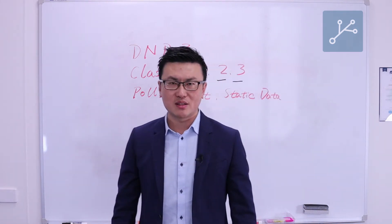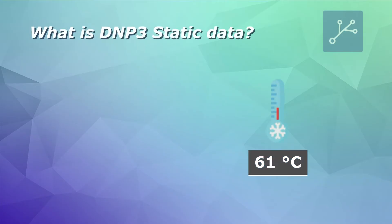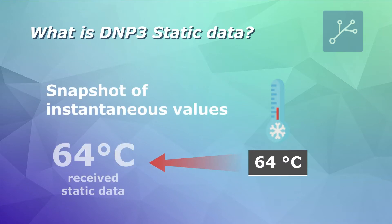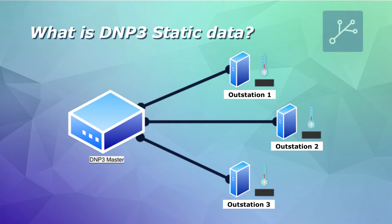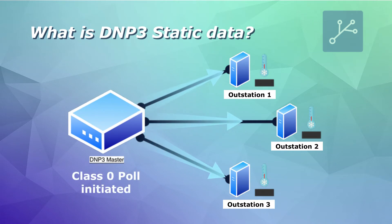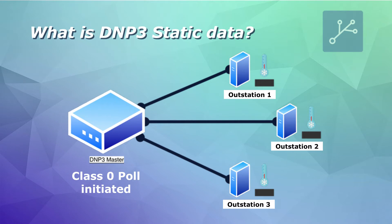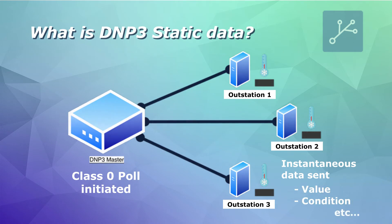What does steady data mean? In simple terms, steady data means a snapshot of the value and the conditions of those data points configured in a DMP3 outstation. For example, when the DMP3 master issues a class 0 pole, it would request all the DMP3 data configured in its outstations — including value, condition, or any other DMP3 attributes.